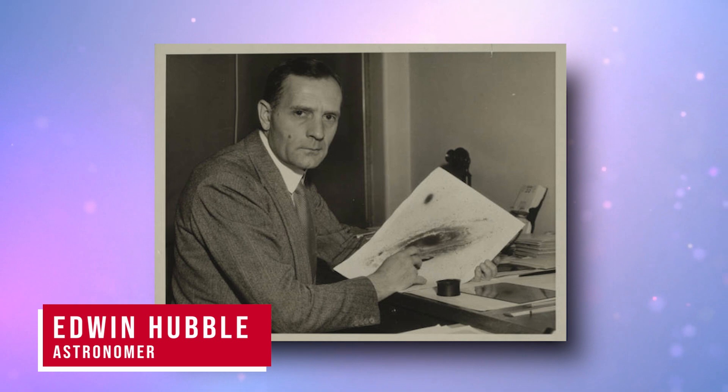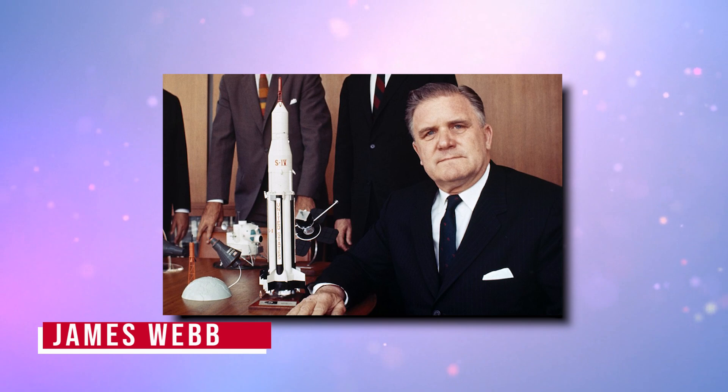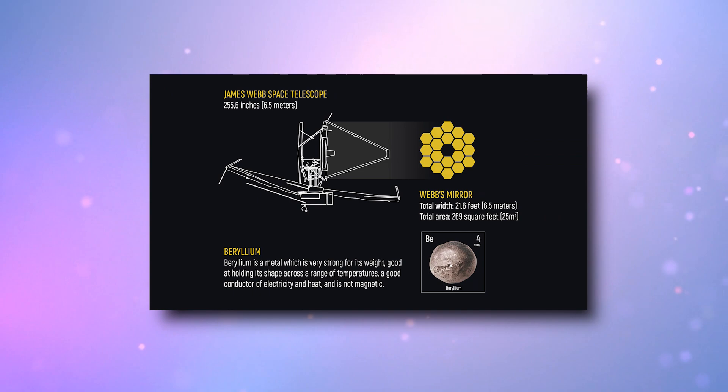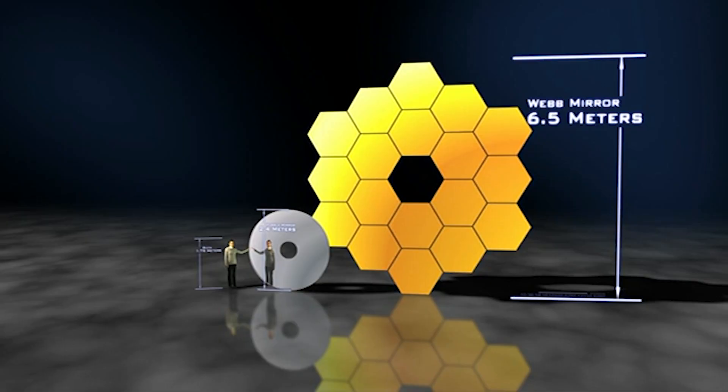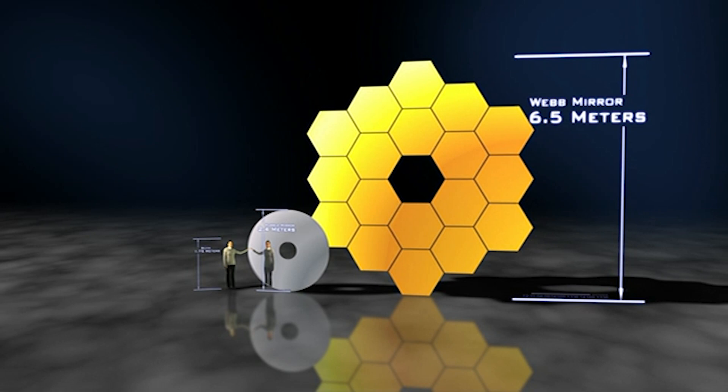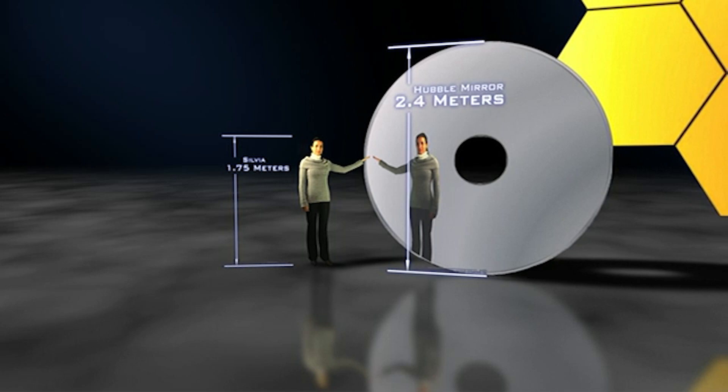The Hubble Space Telescope was named after eminent astronomer Edwin Hubble, while the Webb has been named after NASA Administrator James Webb. The most notable distinction between the two is that the Webb has been equipped with a 6.5-meter diameter primary mirror, endowing it with a large collecting area. No other space telescope has such a large primary mirror — not even Hubble, because its mirror has a diameter of only 2.4 meters. The difference is overwhelming because Webb has 6.25 times more collecting area than Hubble.